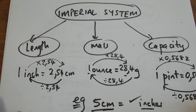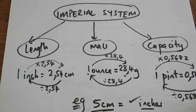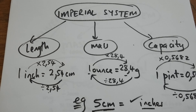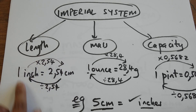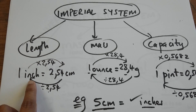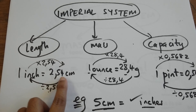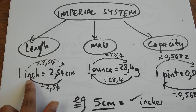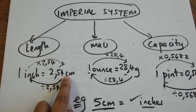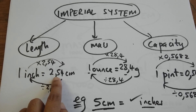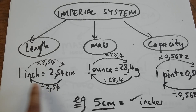In our country we use the metric system; overseas they use the imperial system. Our focus will be on length, mass, and capacity. Under length, from my conversion table: one inch is equivalent to 2.54 centimeters. When I convert from inches into centimeters, I multiply. When I convert from centimeters back into inches, 2.54 becomes a one, so I divide by 2.54.